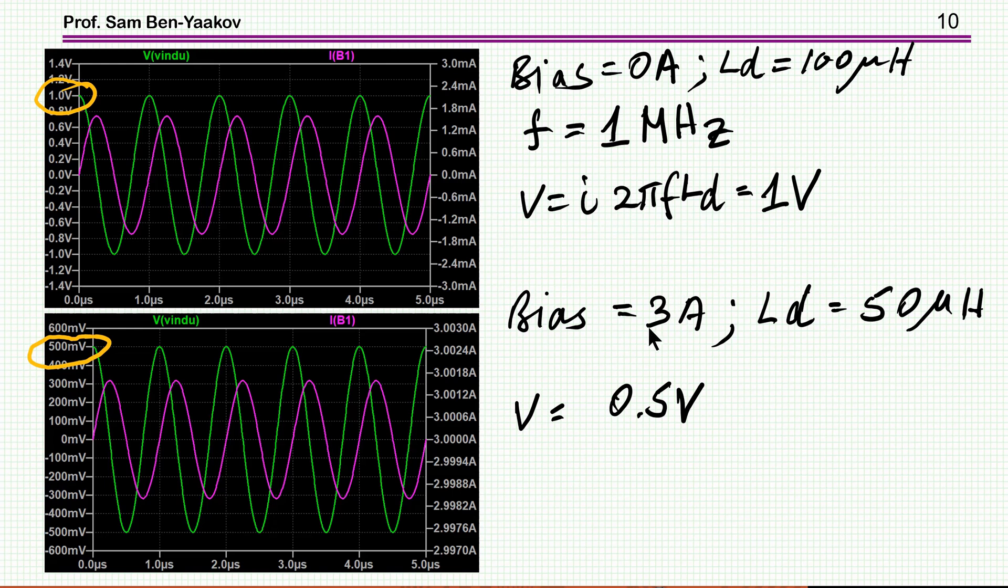And then if I change the bias to 3 amps and with the same excitation, I get 0.5 volt because the inductance went down to 50 micro-Henry. So it works very nicely for small signal.